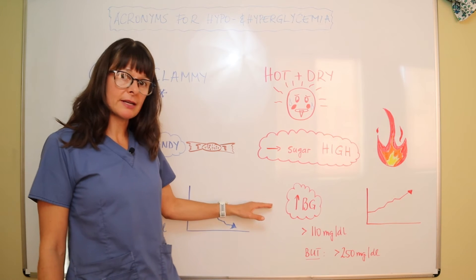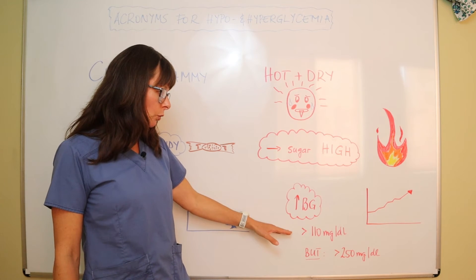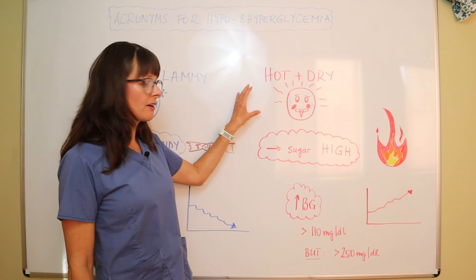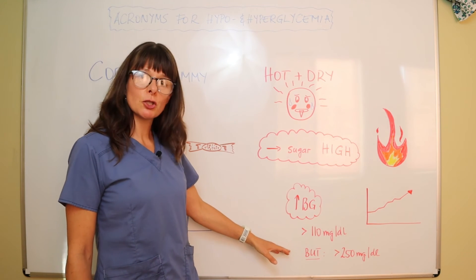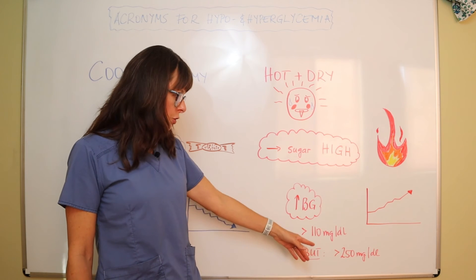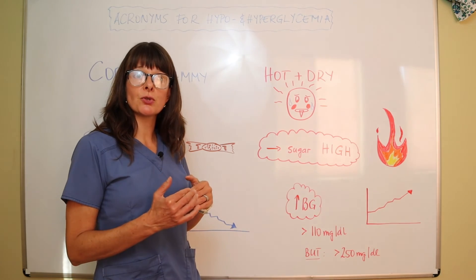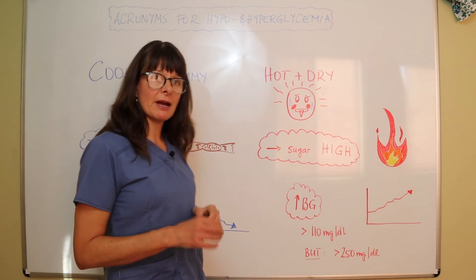Usually hyperglycemia is defined as a blood sugar of about 110 or above, but the patient might not have these symptoms until the sugar is quite elevated at 250 or maybe even above, depending on the patient's baseline and where they usually live. So keep that in mind.